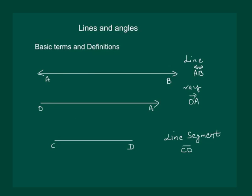But we will not use these symbols of representing a line, a ray and a line segment. Instead, we will write line AB or ray OA or simply line segment CD. Also, sometimes we will use small letters like L or M or N to denote lines.